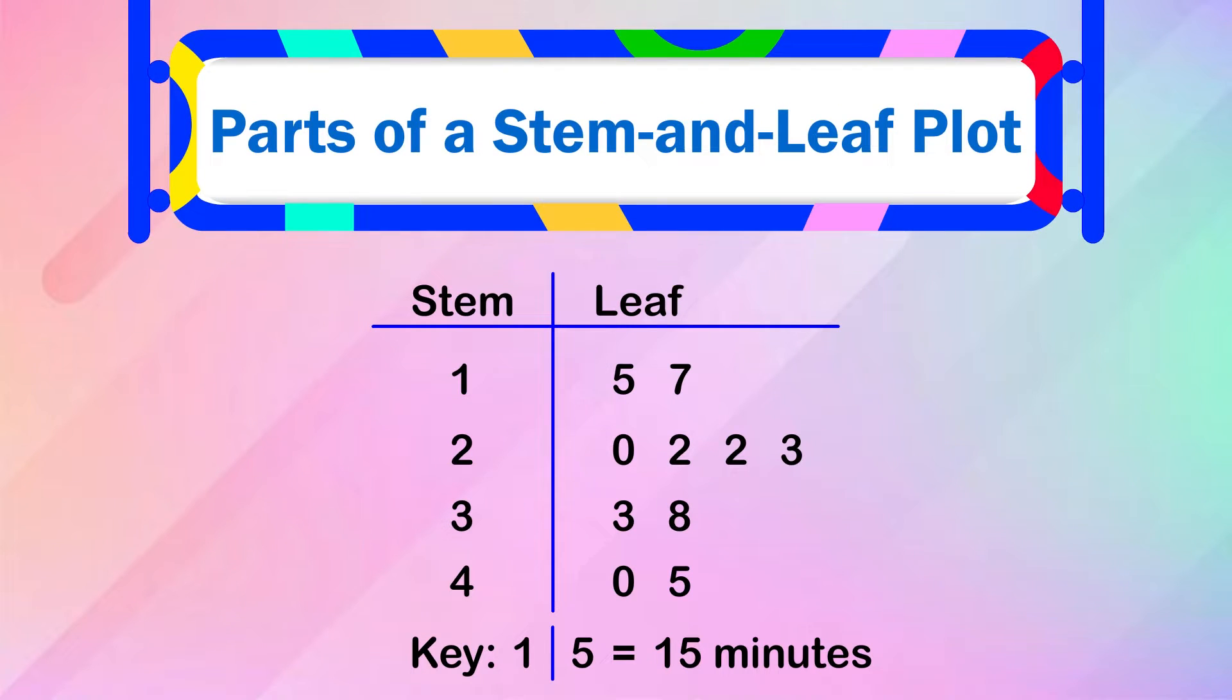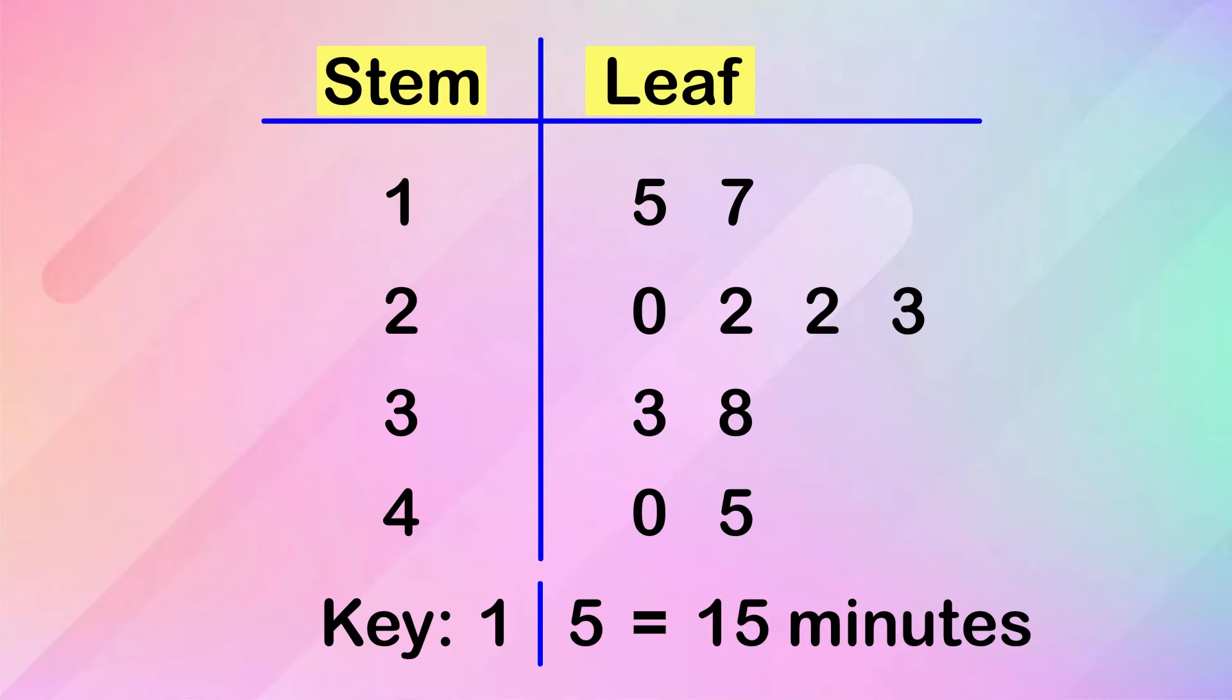First, let's understand the parts of a Stem and Leaf Plot. A Stem and Leaf Plot is a table of values. The first column of the table shows the stems. We have 4 stems, and they are 1, 2, 3, and 4.